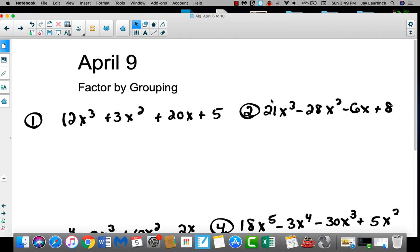That's all you have to do. So, let's see here. Okay, problem number one says 12x cubed plus 3x squared plus 20x plus 5.